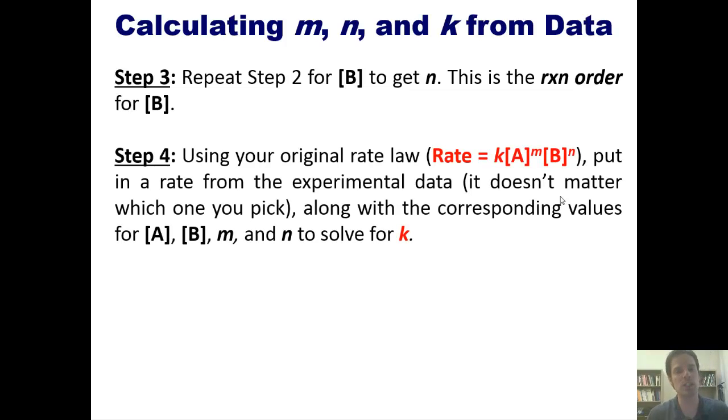Step four, using your original rate law, shown here in red, put in a rate from the experimental data. It doesn't matter which one you pick, along with the corresponding values for A, B, M and N in order to solve for K. Got it? Probably not. Let's go ahead and do an example.